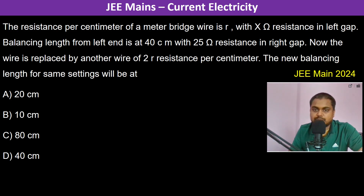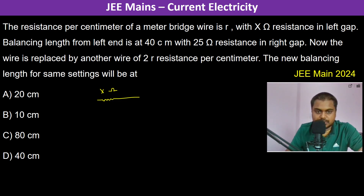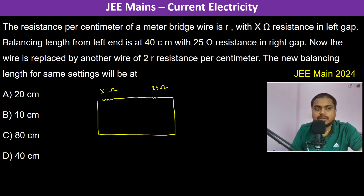The resistance per centimeter of a meter bridge wire is r. With X ohm resistance in the left gap, the balancing length from the left end is at 40 centimeters, with 25 ohm resistance in the right gap. This is the meter bridge setup — the wire is now replaced. This is the galvanometer, this is 40 centimeters on the left, and 60 centimeters on the right.